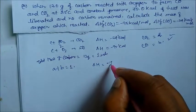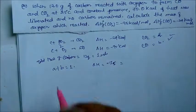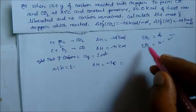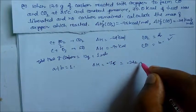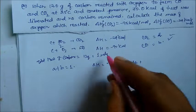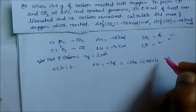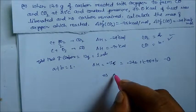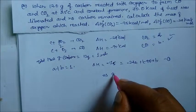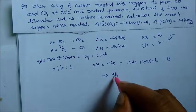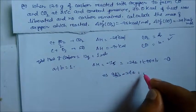Heat liberated is delta H equal to minus 75 kilocalorie. We write: minus 94 times A plus minus 25 times B equals minus 75. Rearranging: 95B minus 24A equals 75. This is equation 2.